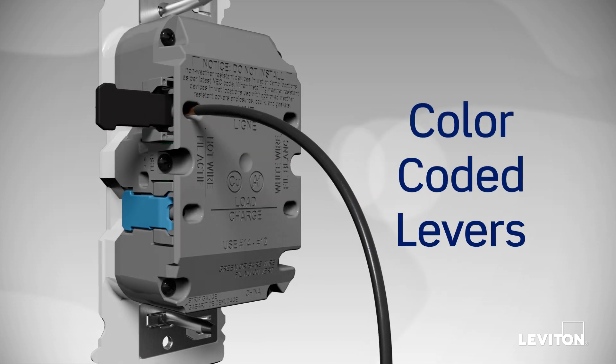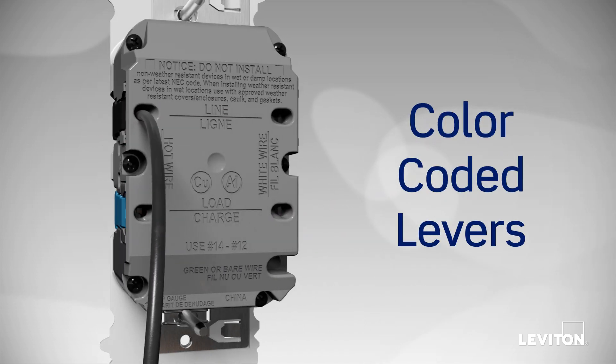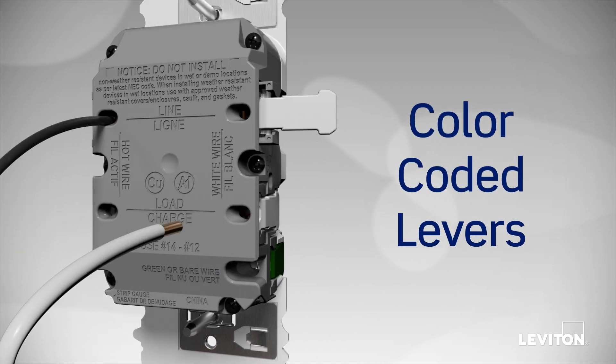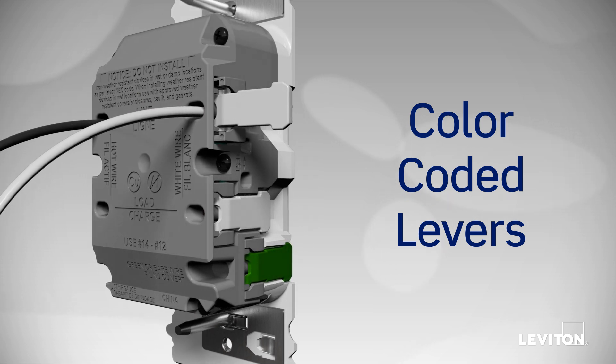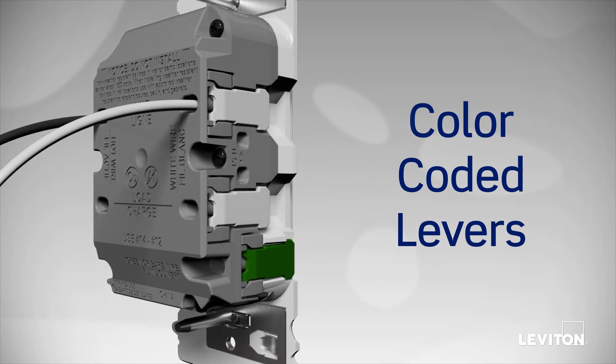Utilizing unique color-coded lever terminals, wiring a GFCI is now as simple as opening a lever, pushing in a stripped wire, and snapping down the lever. That's it.